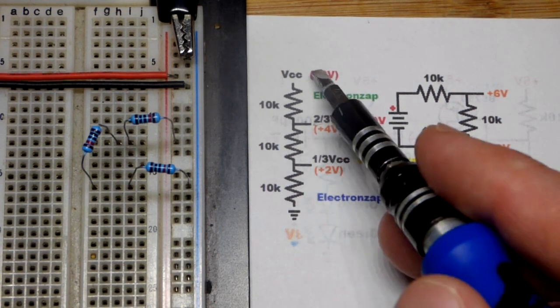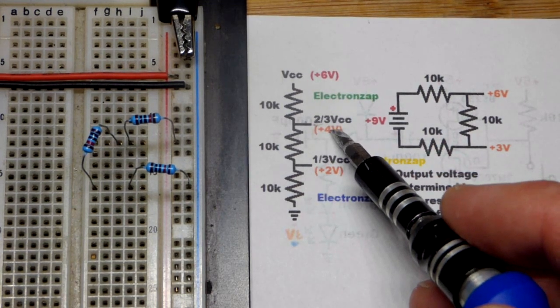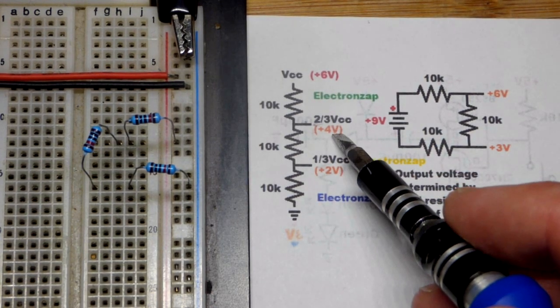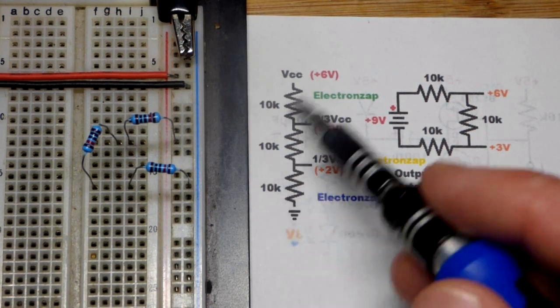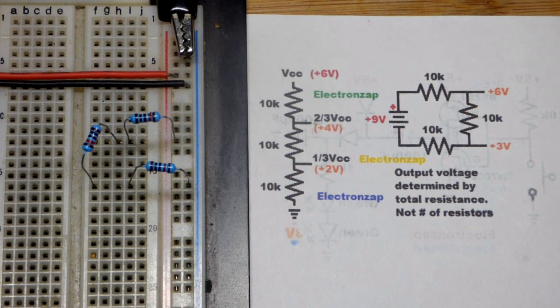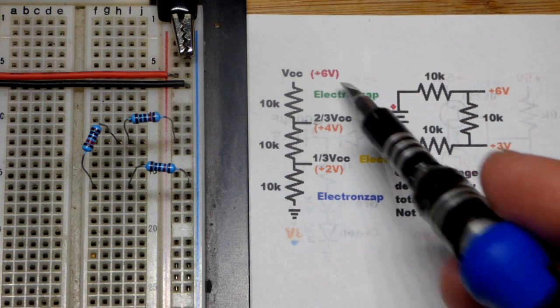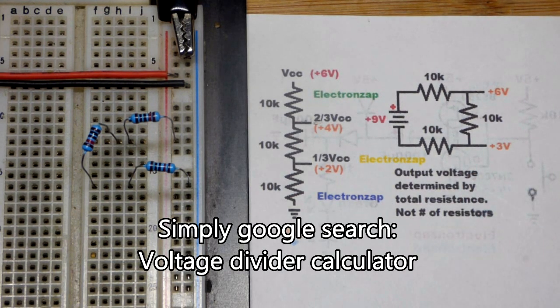And so in this case, again, six volts there, closer to the positive supply. We're going to have four volts, two thirds of that voltage. And we got one third there. So this is easy math here. These equal value resistors. If you're using resistors that are not equal value or a weird supply voltage where it's not going to come out to a nice round number, there's formulas for that. But we're not going to worry about that in this video.